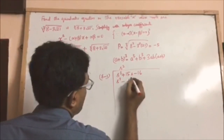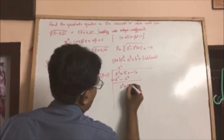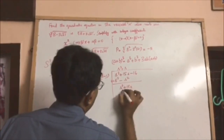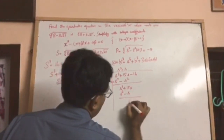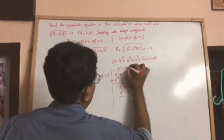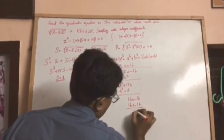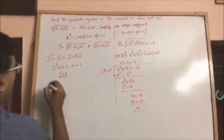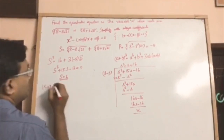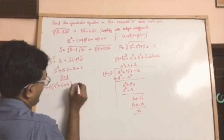Carrying out the long division: s cubed minus s squared, subtract to get s squared plus 15s; then s squared minus s, leaving 16s minus 16, giving plus 16. So we factorize the expression as (s minus 1)(s squared plus s plus 16) equals 0.